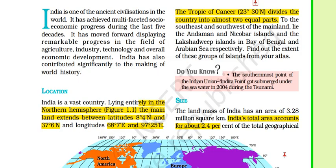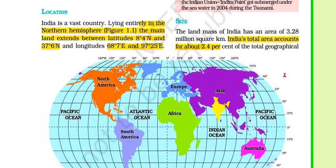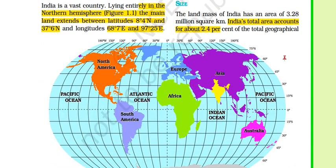To the south-east and south-west, there are two islands. The island in the south-east in the Bay of Bengal is called the Andaman and Nicobar Islands. And the island in the south-west is called the Lakshadweep Islands.